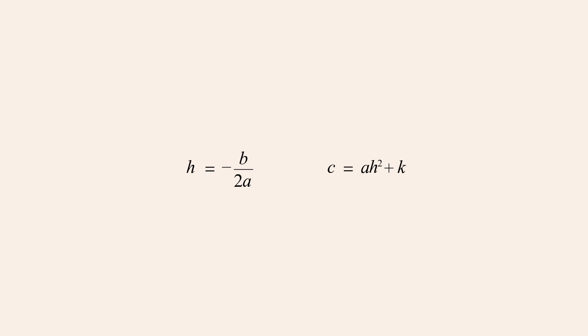To derive the formula for k, we first replace h in the second formula with the right side of the formula for h, and eliminate the parentheses by squaring the numerator and denominator of this fraction. Then, multiplying by a,